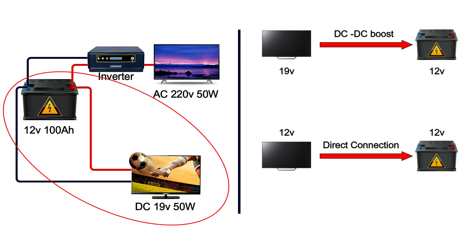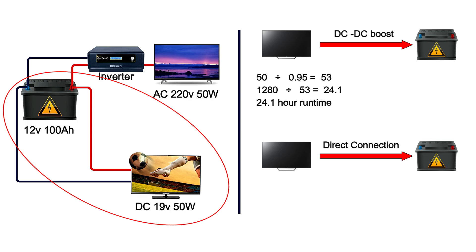For the DC TV calculations: with a boost converter, the TV power rating is 50 watts and the boost converter efficiency is 95% (0.95 ratio). So 50 watts divided by 0.95 gives us 52.6 watts — approximately 53 watts. Dividing 1,280 watt-hours by 53 watts gives us 24.1 hours of runtime with the boost converter. For a direct connection, 1,280 watt-hours divided by 50 watts gives us 25.6 hours of runtime.